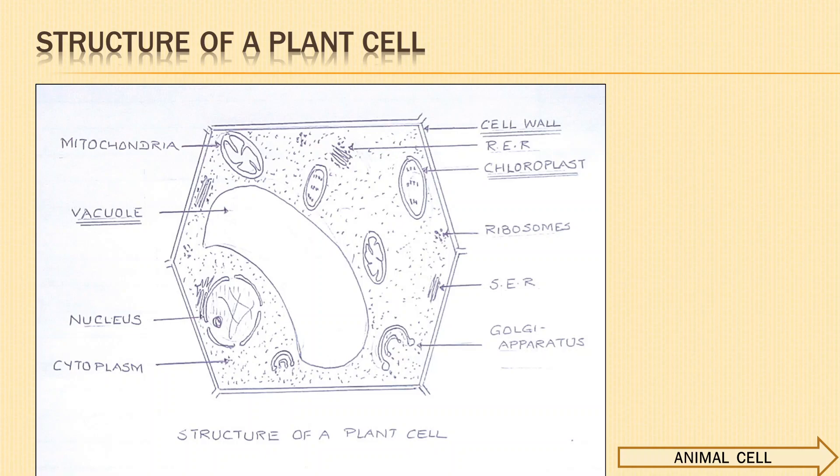The nucleus in the plant cell is pushed to one side because of the presence of the large-sized vacuole. Other organelles marked in the figure are mitochondria, Golgi apparatus, ribosome, rough endoplasmic reticulum, and smooth endoplasmic reticulum. So the unique structures observed are: cell wall, plastid, vacuole, and nucleus pushed to the periphery.